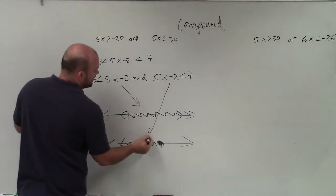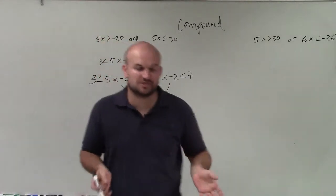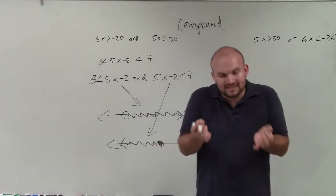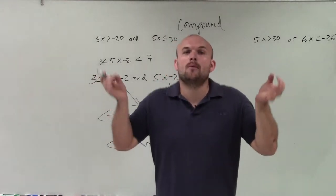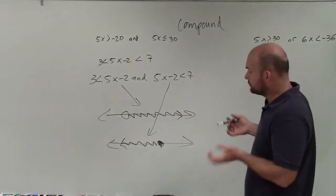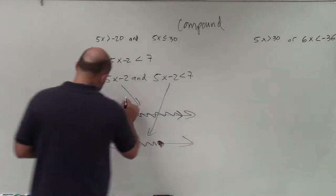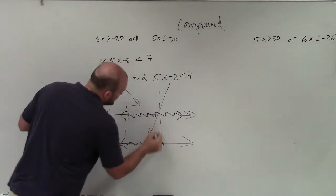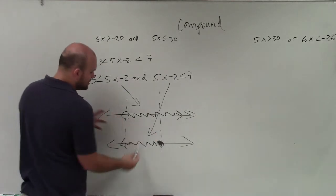So you graph each of your inequalities separately for an and function. Well, an and function only talks about where the two inequalities are true for both of them. So it has to be true for both of them. So what you can see is this inequality, the new inequality, is only true between these two values.